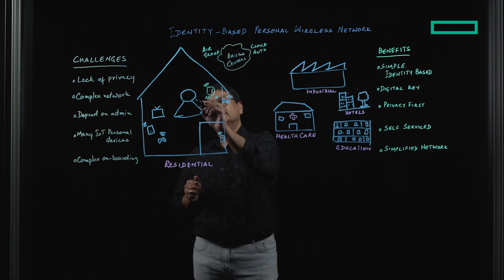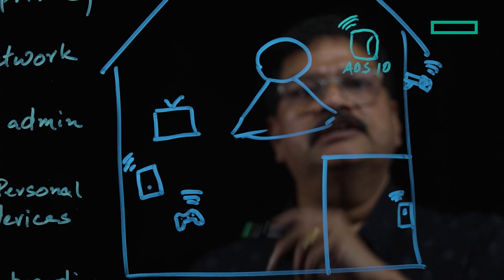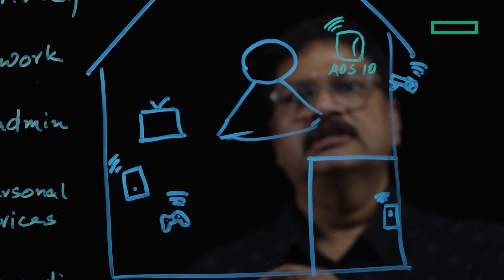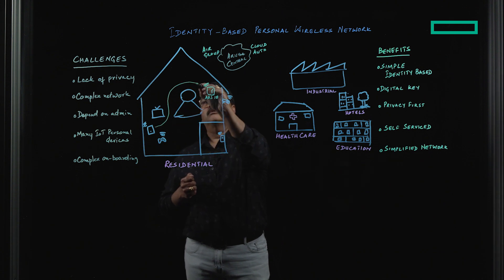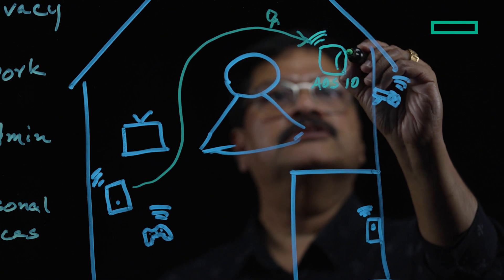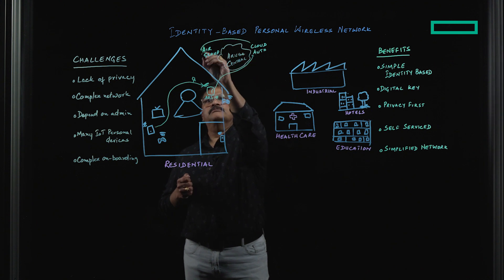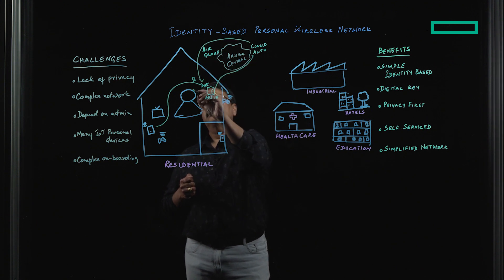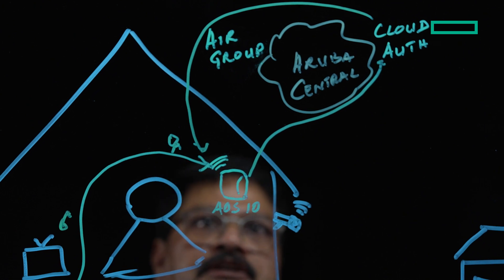For instance, let's say Mr. Jack, who lives in his house, wants to onboard his device. He has an AOS 10 access point already on his network. He wants to connect his mobile device onto the access point, so he sends his identity. Based on that identity, the access point goes and talks to the Aruba Central CloudAuth, and CloudAuth returns back saying yes, it knows who that is, and provides a token — essentially a key — that he uses to onboard the device.